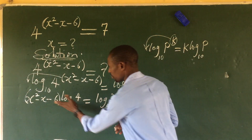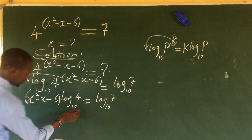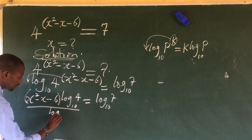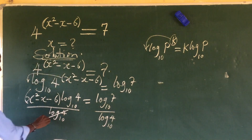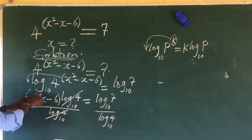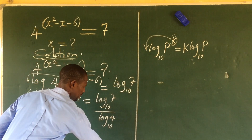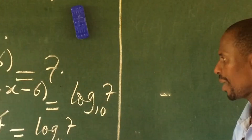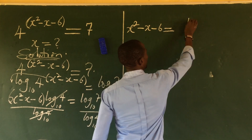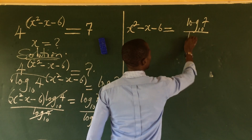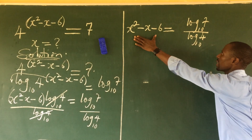Now we want to isolate x. We divide both sides by log₁₀(4), so the left-hand side becomes x² − x − 6. This gives us: x² − x − 6 = log₁₀(7) / log₁₀(4). We now have a quadratic on the left — the challenge is solving it for x.